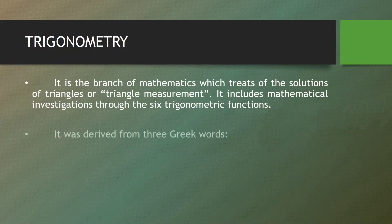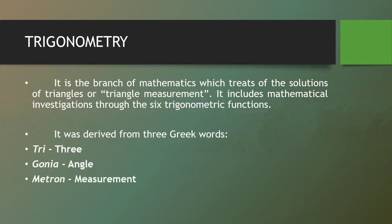Trigonometry was derived from three Greek words: tri meaning three, gonia meaning angle, and metron meaning measurement.